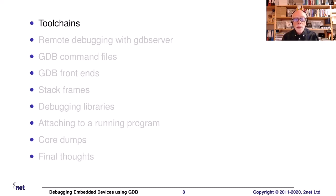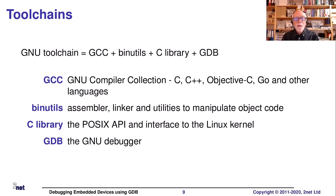Let's talk about toolchains before we get onto the debugging. A toolchain is a C compiler, specifically GCC — the GNU C compiler collection — plus a package called binutils, which we need for the assembler and the linker and some other useful tools, plus a C library. The C library allows us to access the operating system underneath, which is Linux. And of course GDB, which is what we're talking about.